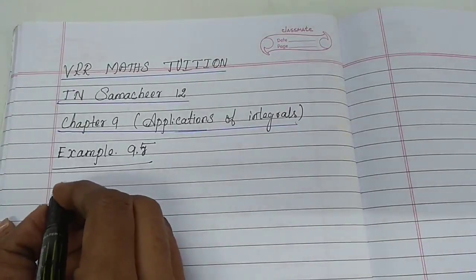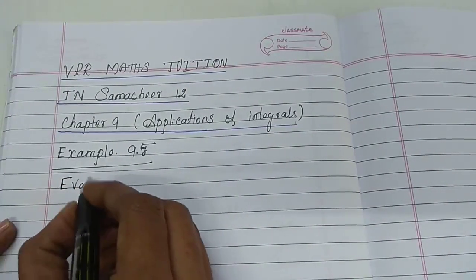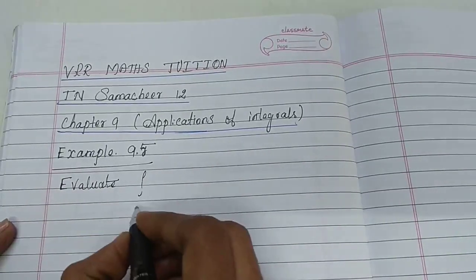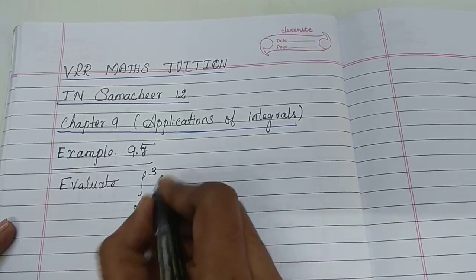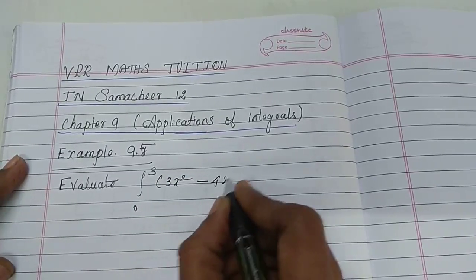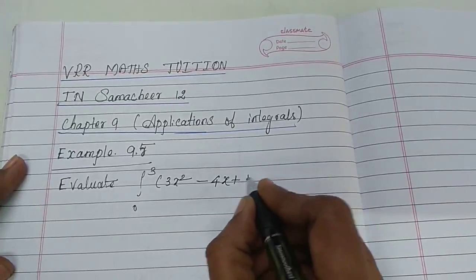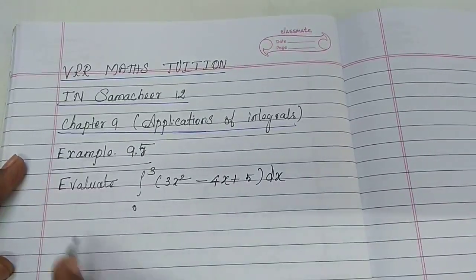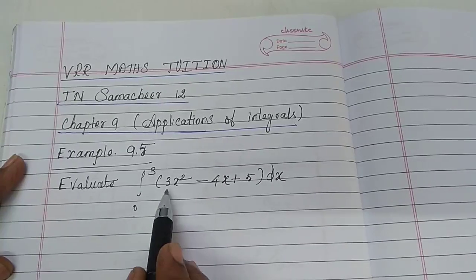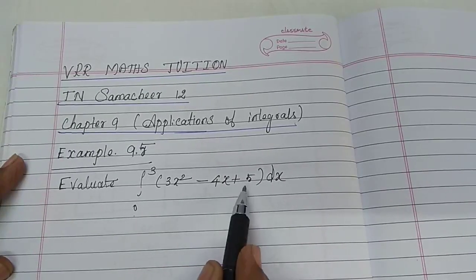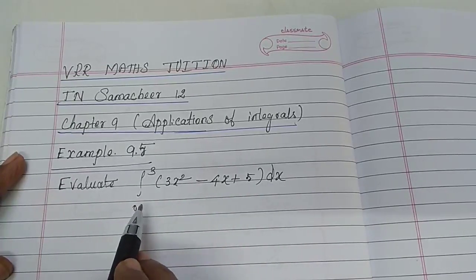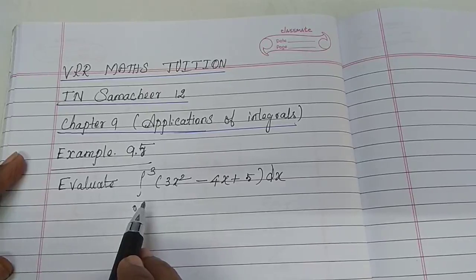The question: evaluate integral 0 to 3 of (3x squared minus 4x plus 5) dx. We will evaluate this question using the 2nd Fundamental Theorem of Integral Calculus.